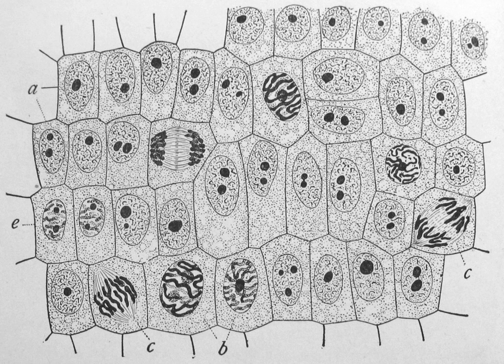Most prokaryotes are the smallest of all organisms, ranging from 0.5 to 2.0 micrometres in diameter. A prokaryotic cell has three architectural regions. Enclosing the cell is the cell envelope, generally consisting of a plasma membrane covered by a cell wall which, for some bacteria, may be further covered by a third layer called a capsule. Though most prokaryotes have both a cell membrane and a cell wall, there are exceptions such as mycoplasma and thermoplasma which only possess the cell membrane layer.